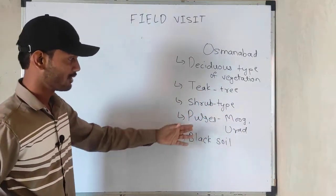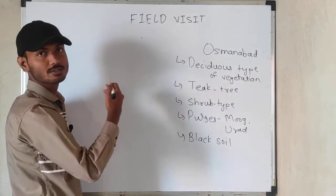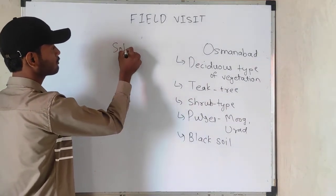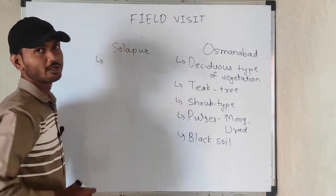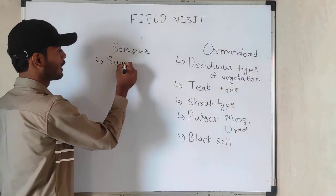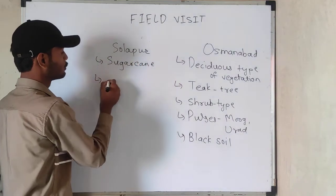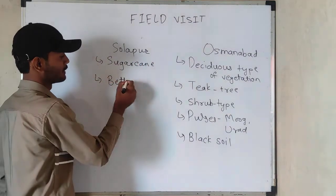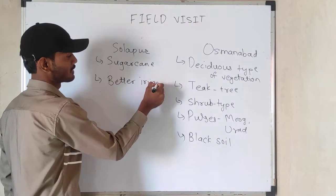So in Usmanabad, teak, shrub-type vegetation, pulses, and black soil are the key features to remember. As we move towards the Solapur region, we find sugarcane cultivation on a large proportion. This is due to better irrigation facilities in the Solapur to Pune region, which is famous for sugarcane cultivation.